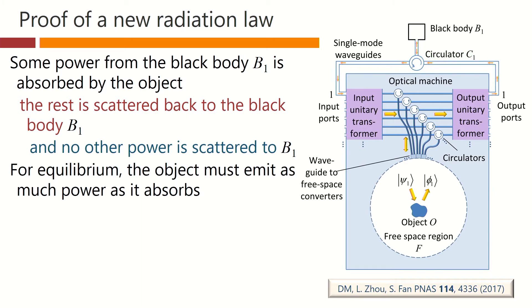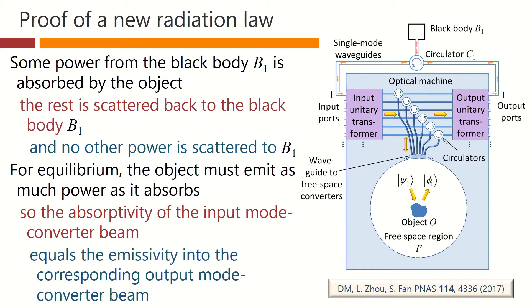Now, for equilibrium, the object must emit as much power as it absorbs. So the absorptivity of the input mode converter beam equals the emissivity into the corresponding output mode converter beam. To get balance, we must have an equal emitted power back into this output. Otherwise, we do not get equilibrium between this object, which is presumably at the same temperature as a black body.